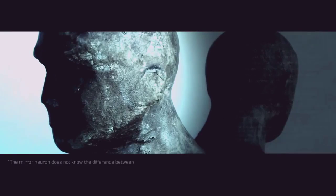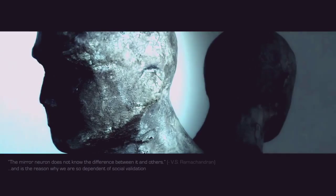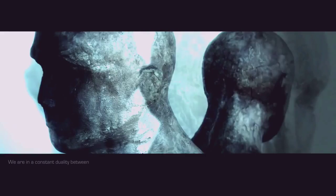The mirror neuron does not know the difference between it and others and is the reason why we are so dependent on social validation and why we want to fit in. We are in a constant duality between how we see ourselves and how others see us. This can result in confusion in terms of identity and self-esteem, and brain scans show that we experience these negative emotions even before we are aware of them.